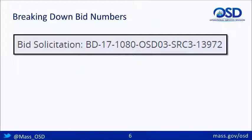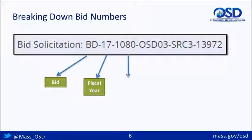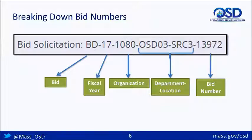Email notifications may include bid numbers. When a buyer posts a bid solicitation, ComBuys issues a bid number, which is a long string of letters and numbers. Each section means something. 'BD' simply means bid solicitation or bid. The next number — for example, 17 — reflects the fiscal year when the bid solicitation was posted. The next four-digit section is the numerical code for the organization that posted the bid. The next two sections reflect the department and location of the buyer organization, and finally, the last section reflects the numerical bid number.